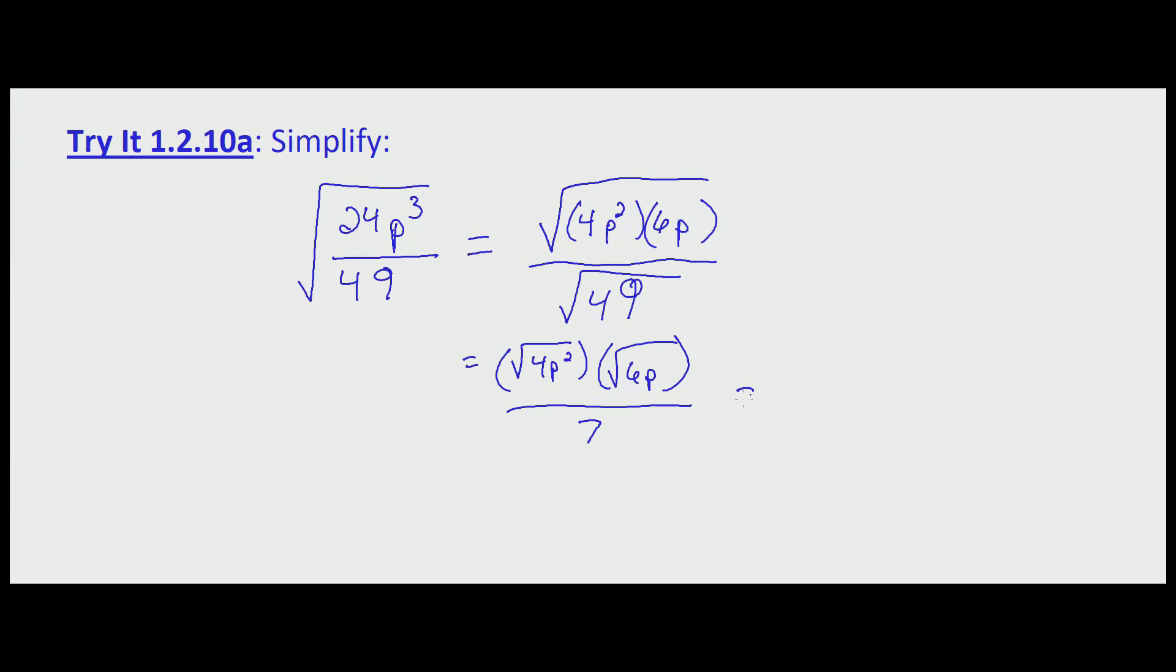Now with our square root of 4p squared, we have a square root and the variable is being squared, and therefore we have to take the absolute values. The square root of 4 is just 2. The square root of p squared is the absolute value of p.